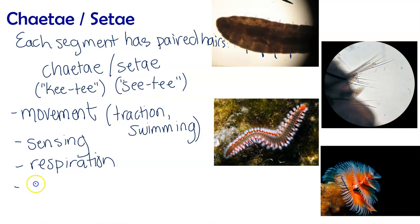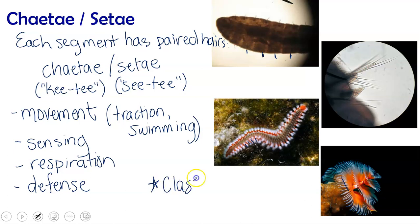The last function is defense. Think about eating a yummy piece of pizza, and then think about eating a hairy piece of pizza — no one wants to eat the hairy one. Those hairs are there on many annelids to protect them from being eaten. One thing that we as humans use these setae for is classification. Annelid classification is based on the number of hairs per segment.